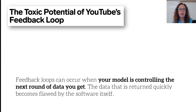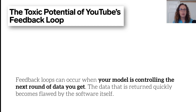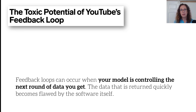The first is feedback loops. Feedback loops can occur whenever your model is controlling the next round of data you get, so the data returned quickly becomes flawed by the software itself. This can show up in many places. One example is with recommendation systems, which are ostensibly about predicting what content the user will like, but they're also determining what content the user is even exposed to and helping determine what has a chance of becoming popular.